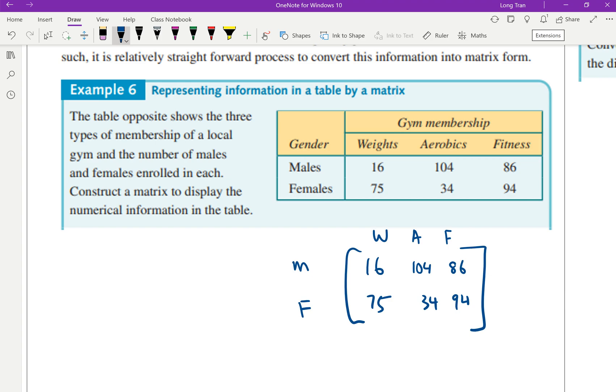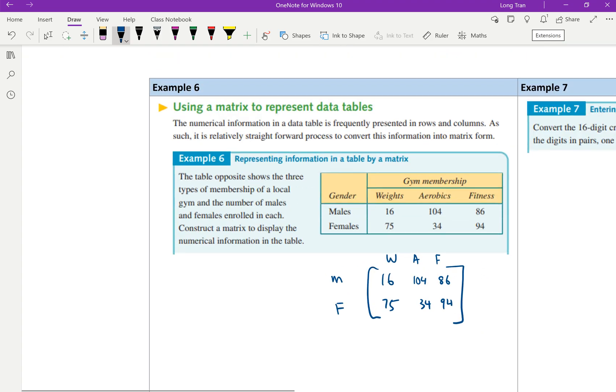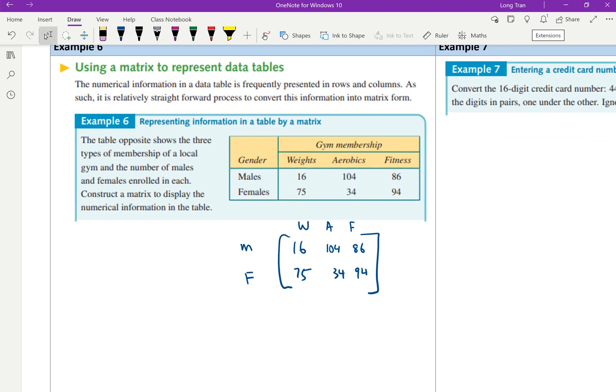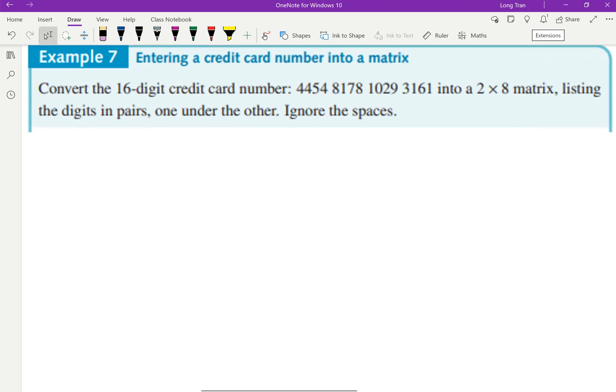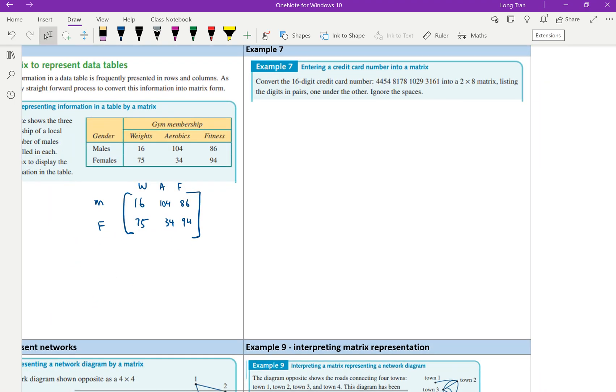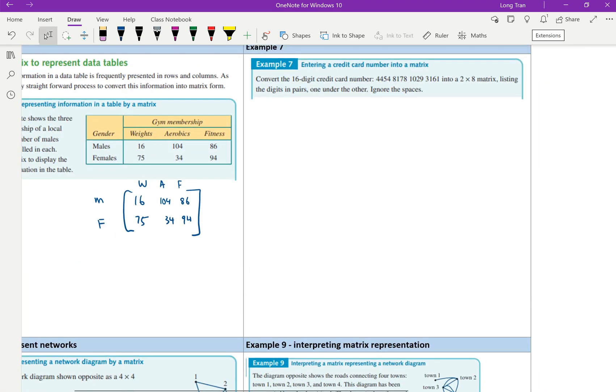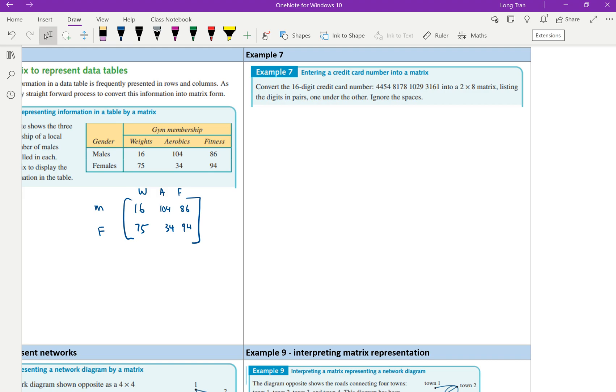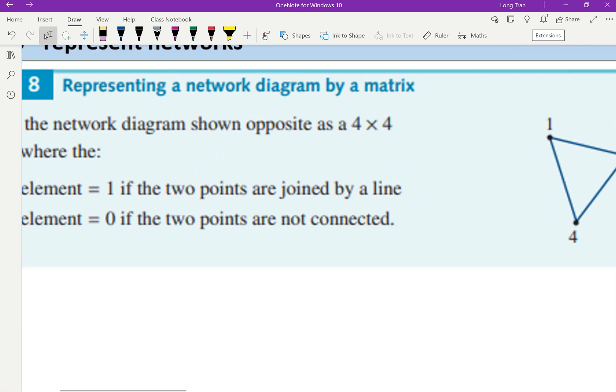That's what they want you to get familiar with - how do you take a matrix and put it into an application type problem. That's the entry level. So you'll find 11B is quite nice and entry level. When you're doing the next three questions, they'll tell you to convert the 16 digit credit card number into a two by eight matrix. What you're trying to do is again put them into a matrix form.